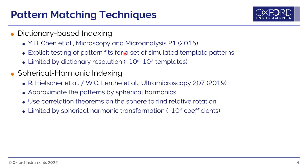An improvement to dictionary-based indexing has been proposed in the last three or four years: spherical harmonic indexing, where the patterns are approximated by spherical harmonics. The process uses correlation theorems on the sphere itself to find the relative rotation, and therefore the best matching orientation that would fit each experimental pattern. In turn, this is limited by the complexity of the maths, and in particular by the spherical harmonic transformation with about 100 coefficients.